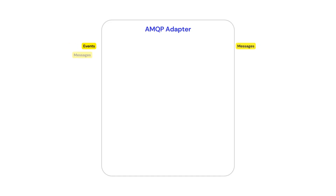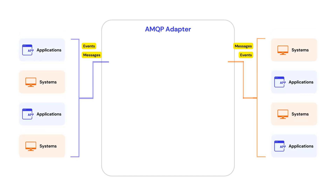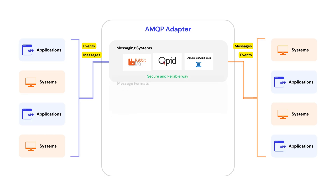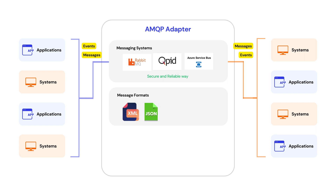We can use the AMQP adapter when you want to exchange messages or events between applications or systems via messaging systems in a secure and reliable way. The AMQP adapter can handle various message formats like XML, JSON, CSV, or EDI messages.